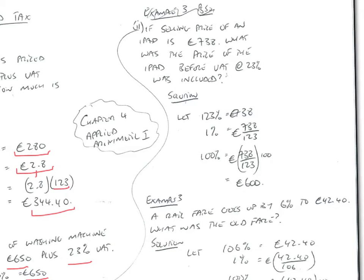This is one where students sometimes have problems with. It's kind of working backwards. So, if the selling price of an iPad is 738 euros, what was the price of the iPad before VAT at 23% was included? Well, the solution for this is to recognize that 738 euros accounts for the 100% price of the iPad plus the 23% that was included. So, 123% equates to 738 euros.